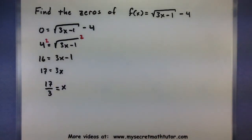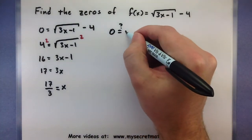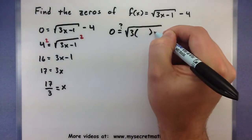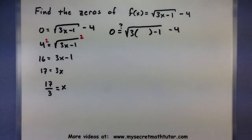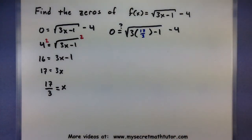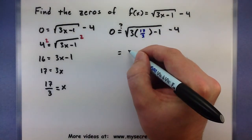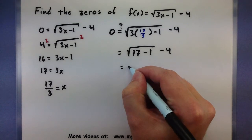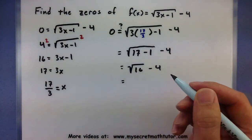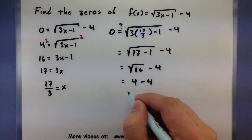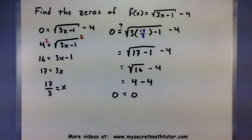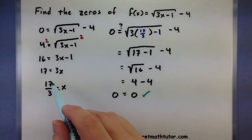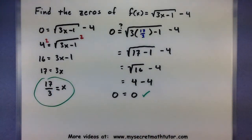When working with radicals, we must check the solution in the original equation just to make sure it works out. If I put in this number, do I really get 0? So with 17 thirds plugged in, working on the inside, I can see that the 3 and a 3 will cancel out, leaving just 17 underneath. 17 minus 1 gives me 16, and the square root of 16 is 4. So I have 4 minus 4, which does equal 0. This checks out, so at x equals 17 thirds, there is a zero of the function.